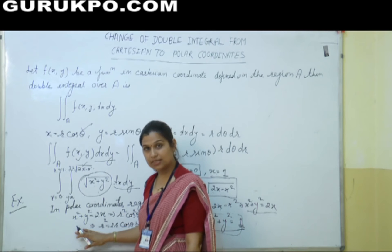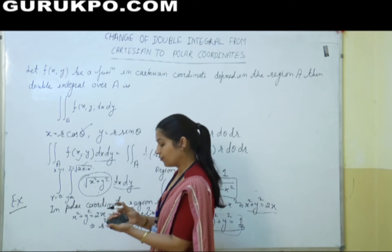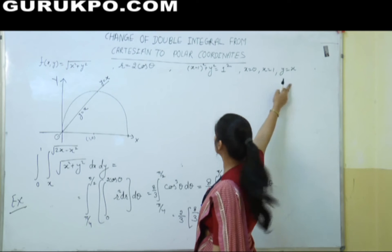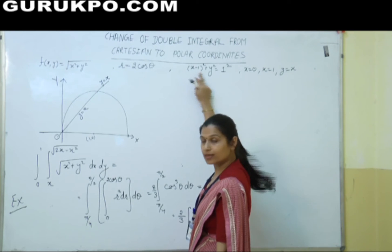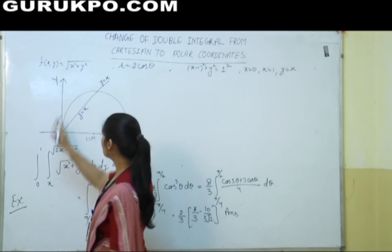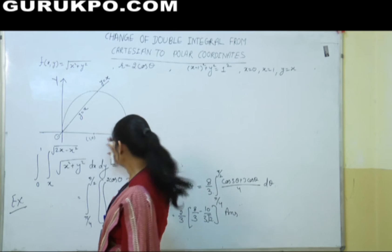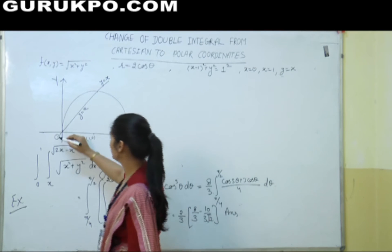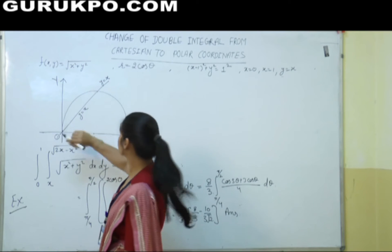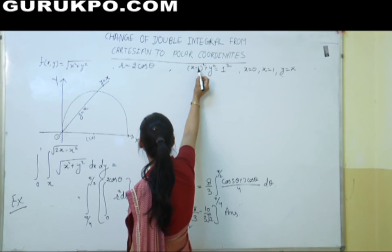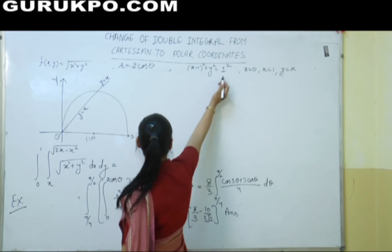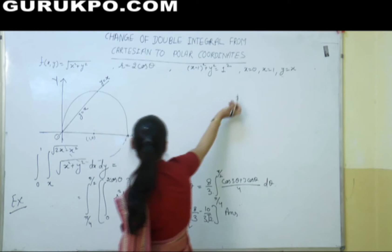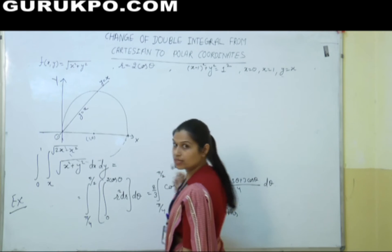Now we draw it geometrically so that we can convert our limits very easily. In Cartesian form, our region is bounded by x = 0, x = 1, y = x, and the circle with center (1, 0) and radius 1. Geometrically, on the x-y axes, y = x is a straight line through the origin, and the circle has center (1, 0) and radius 1. The boundaries x = 0 and x = 1 are vertical lines.